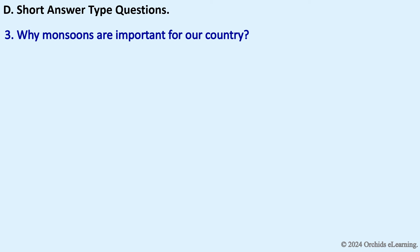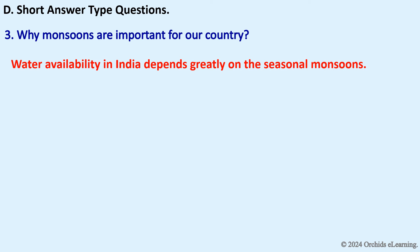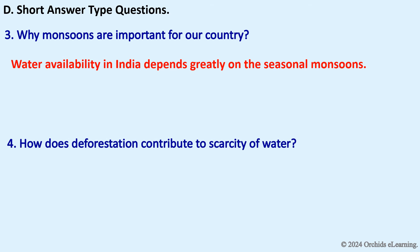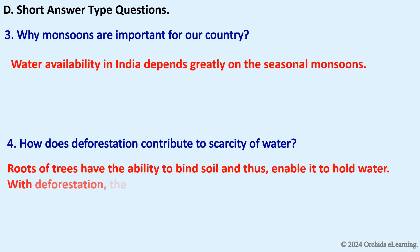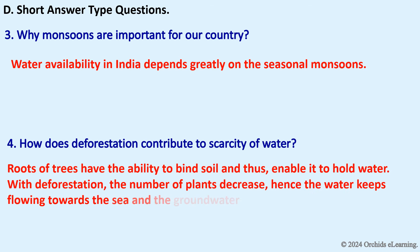Why are monsoons important for our country? Water availability in India depends greatly on the seasonal monsoons. How does deforestation contribute to scarcity of water? Roots of trees bind soil and enable it to hold water. With deforestation, the number of plants decreases, so water keeps flowing towards the sea and groundwater is not recharged.